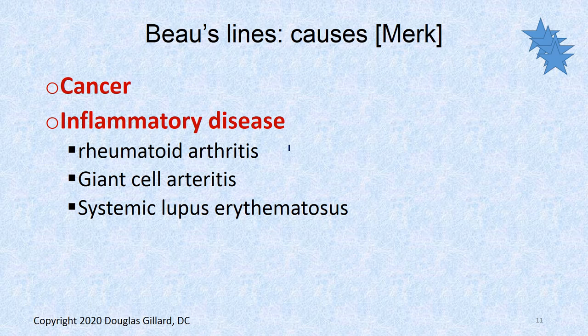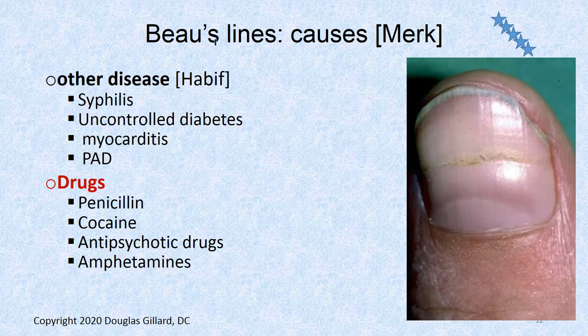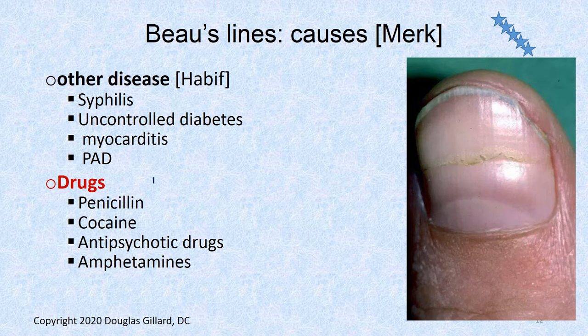That should ring a bell — amaurosis fugax, remember that? Shade-drawn blindness. Lupus erythematosus. More causes: syphilis, not so much around these days; uncontrolled diabetes; myocarditis; PAD, peripheral artery disease associated with this; cocaine, penicillin, antipsychotic drugs, amphetamines — they've all been associated with this.